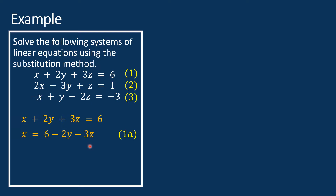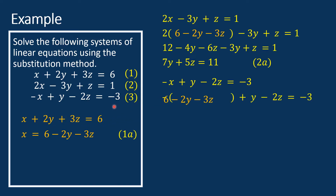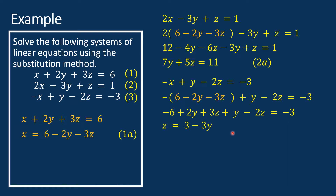Substitute the expression for x into the other equations. For equation 2, substituting x equals 6 minus 2y minus 3z, we get 12 minus 4y minus 6z minus 3y plus z equals 1, which simplifies to 7y plus 5z equals 11. Let's call this equation 2a. For equation 3, substituting x equals 6 minus 2y minus 3z, we get negative 6 plus 2y plus 3z plus y minus 2z equals negative 3, which gives z equals 3 minus 3y. Let's call this equation 3a.